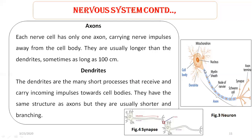Now I have mentioned the myelin sheath. What is myelin sheath? Myelin sheath is a fatty insulating layer that surrounds the nerve cell — a fatty protecting layer that surrounds the nerve cell.